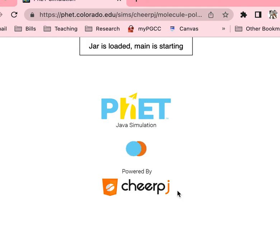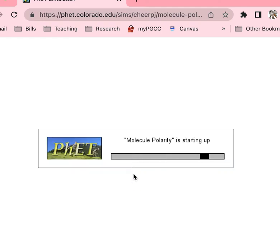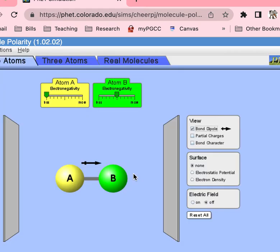Click on the Real Molecules tab. Once it comes up, for each of the following molecules, draw the molecule with its bond dipoles and with its molecular dipole. Then decide if it's a polar or non-polar molecule. If there is no yellow slash orange molecular dipole arrow, then it is a non-polar molecule.